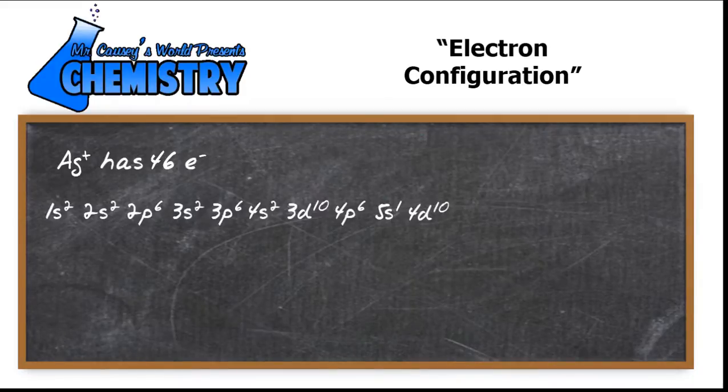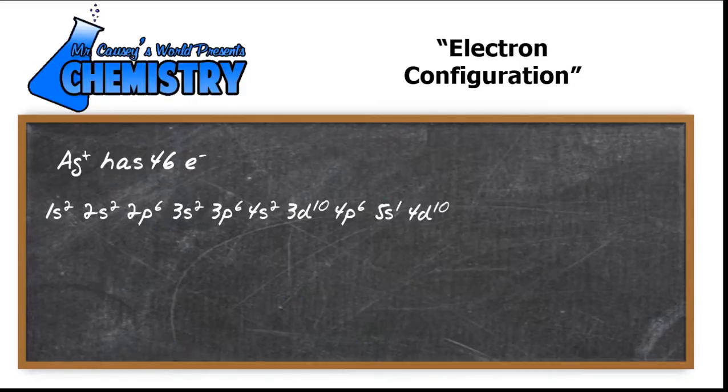So there we go. There's our electron configuration. Hold it. That's the electron configuration for silver.